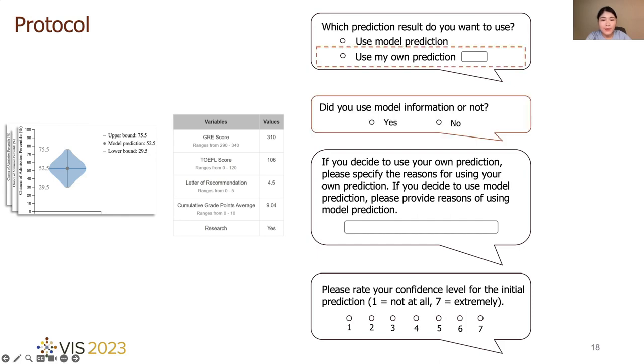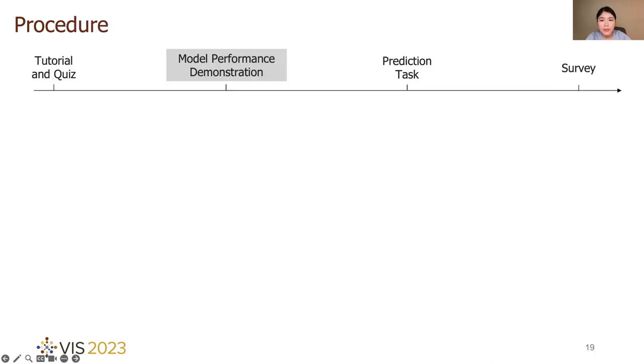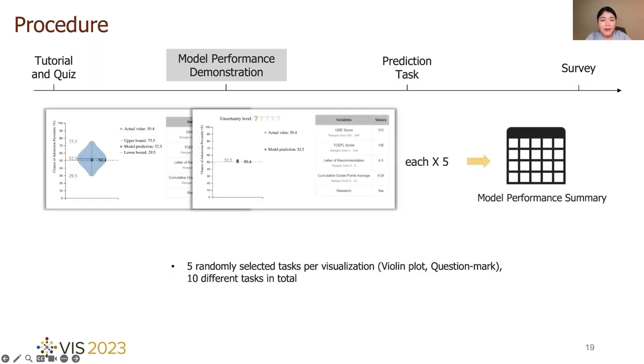Additionally, participants who choose to make their own prediction were asked about the usefulness of the model information as another measure for their reliance on the model. For the overall study process, participants encountered the model performance demonstration phase after passing the tutorial video and quiz. In this phase, they were presented violin plot and question mark visualizations with five randomly selected tasks for each visualization. For better understanding the overall model performance, they were informed of ground truth during each task and model performance summary at the end of this phase. Besides, tasks were presented in a randomized order in this phase.